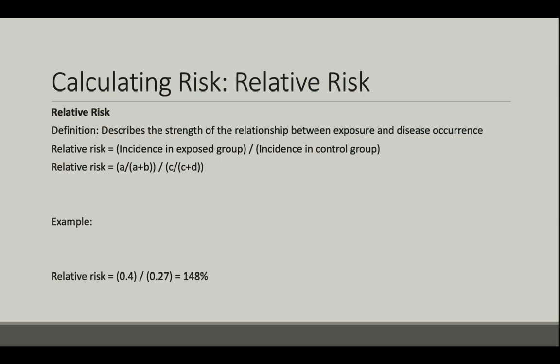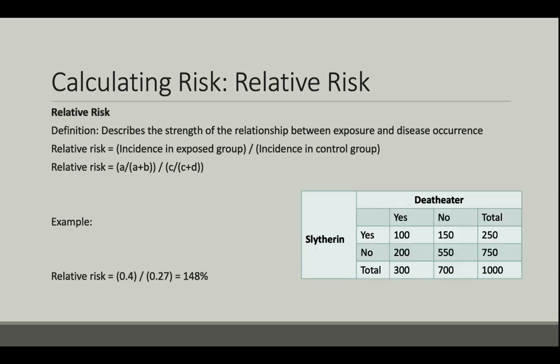Relative risk is calculated very similarly to absolute risk reduction — it only uses division instead of subtraction. As opposed to talking about excess risk of disease, relative risk describes the strength of the relationship between exposure and disease. In our death eater example, relative risk is the incidence of being a death eater with exposure to Slytherin — which is 40% — divided by the incidence of being a death eater when not exposed to Slytherin, which was 0.27. So, we have a 148% relative risk of being a death eater if we are in the Slytherin house.